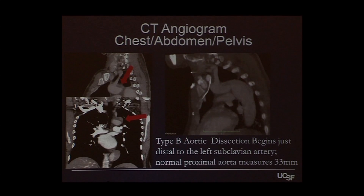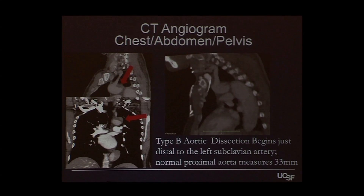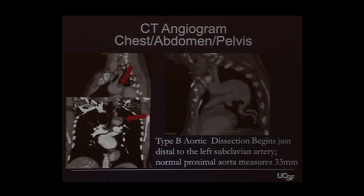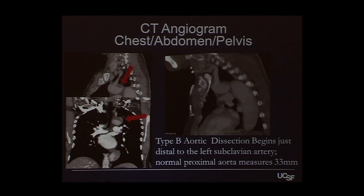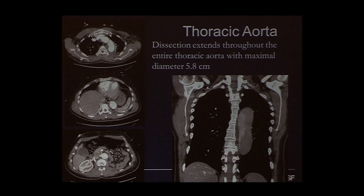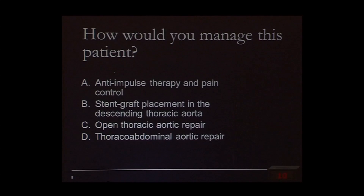This demonstrates his aortic arch. The video pans around the proximal descending thoracic aorta. He does have a type B aortic dissection beginning just distal to the left subclavian artery. The normal proximal aorta measures 33 millimeters. The dissection extended throughout the entire thoracic aorta with a maximal diameter of 5.8 centimeters. In the abdominal aorta, maximal diameter was 2.8 centimeters. All visceral vessels were fed off the true lumen except the right renal artery, which had a very large fenestration. No evidence of malperfusion, normal creatinine.